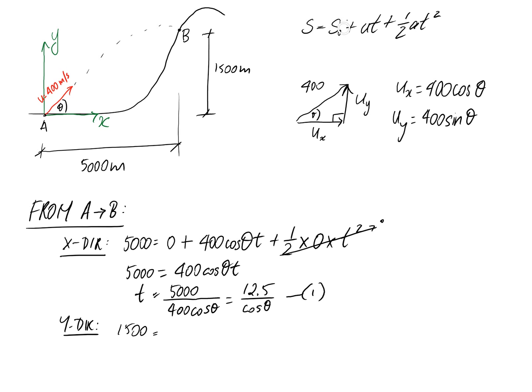Our initial position S in the Y direction is zero as well. Our initial velocity in the Y direction we decided was 400 sin theta. Time we still don't know, so leave it as T.